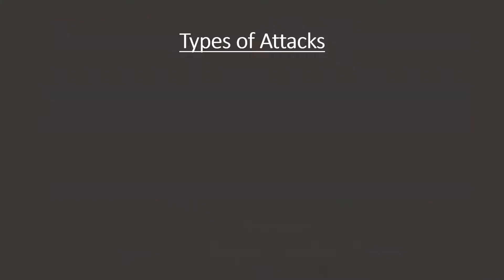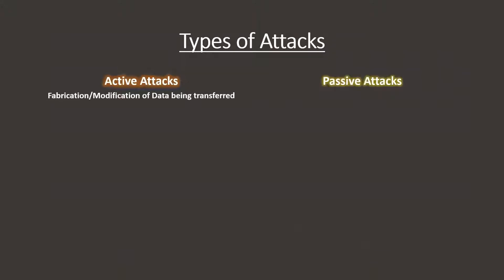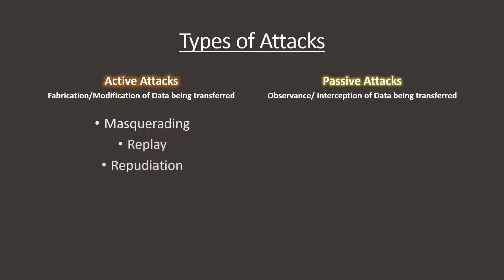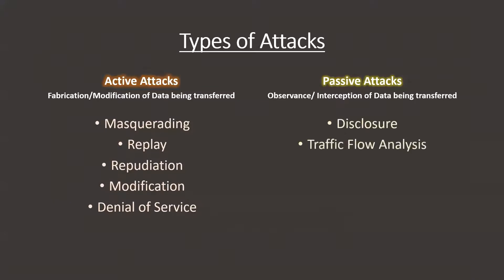The first type is active attacks, where the attacker modifies the data being transferred. Under this attack, we observe five types, which we will be discussing in the next video. The second type is passive attacks, where the attackers don't really modify any data — they use the data for disclosure or traffic flow analysis.